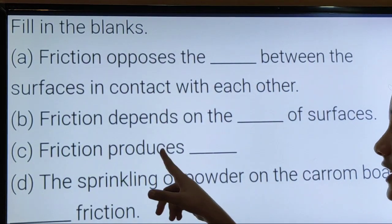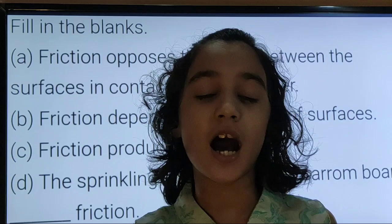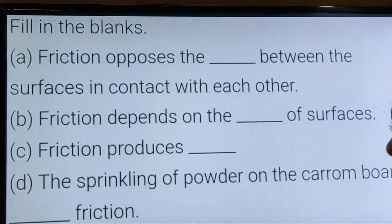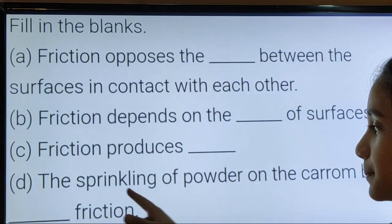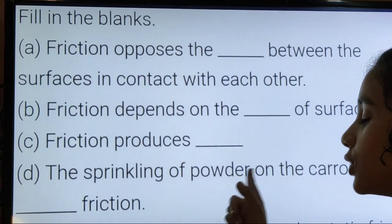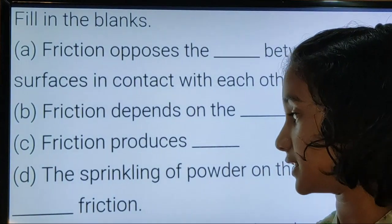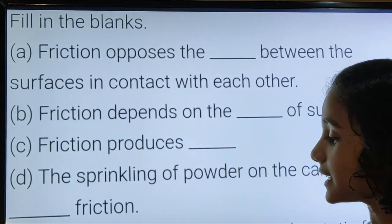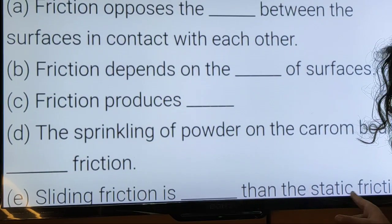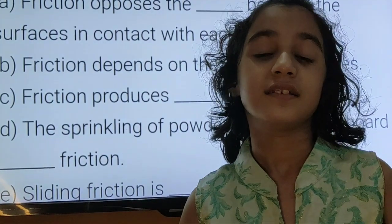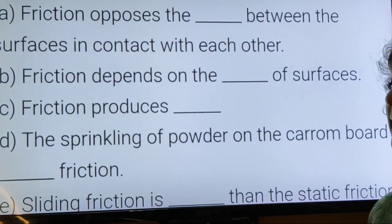C. Friction produces blank. The answer is heat. D. The sprinkling of powder on the carom board blank friction. The answer is reduces. E. Sliding friction is blank than static friction. The answer is less.